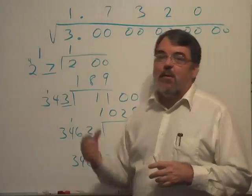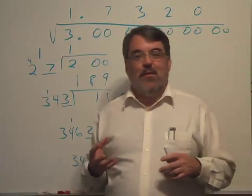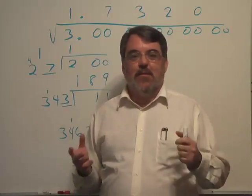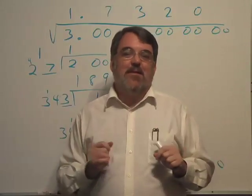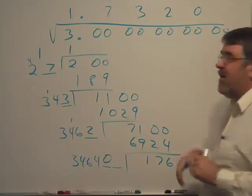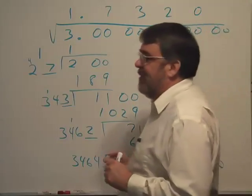One thing you learn in algebra is that these numbers, square roots of integers which are not perfect squares like square root 3, are called irrational. Irrational numbers have two decimal features: their decimals go on forever and there's no pattern.